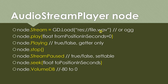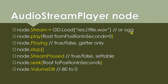WAV files are much bigger but not compressed, so you can play hundreds of them at the same time. OGG files are compressed and much smaller, but you can only play a few at a time because decompressing them requires computational resources. For short sound effects like gunshots, use WAV files. For long sounds like background music, use OGG. In the editor you can drag your audio file from the file system tab to the stream property.